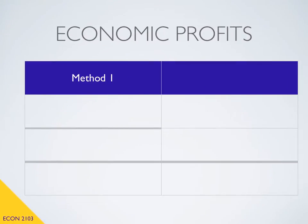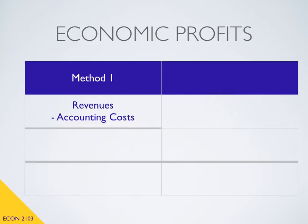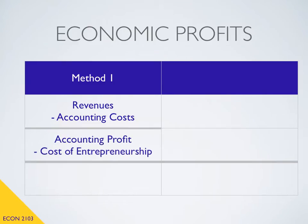Generally speaking, when we compute profits, we're thinking about profits equal revenues minus costs. And to most people, that means we're going to take the revenues that the firm brings in and subtract off what we call our accounting costs — the costs of our land, our labor, and our capital, three of the resources identified previously. When we take our revenues and subtract off our accounting costs, we get accounting profit. This is the type of profit typically studied in a business course and reported on business news.